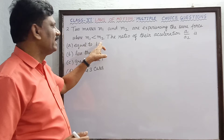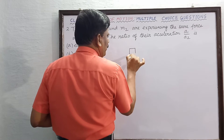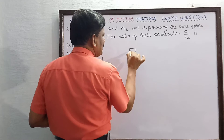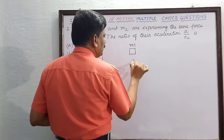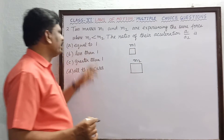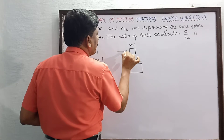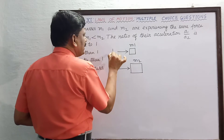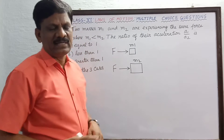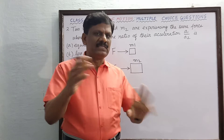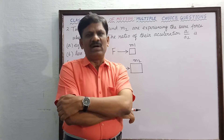One mass is smaller than the other. This is m1 — the smaller mass — and this is m2 — the larger mass. The same force is acting on both masses. Now, applying Newton's second law of motion: force is equal to mass into acceleration, so acceleration is equal to force divided by mass.